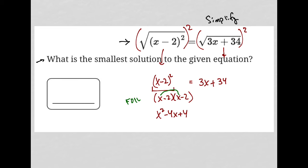F stands for first—I multiply the two first things, which gives x squared. O stands for outer—multiply the two outer things, which is negative 2x. I is for inner—multiply the two inner terms, which is also negative 2x. Negative 2x plus negative 2x gives negative 4x. And L is for last—I multiply the two last terms in parentheses, negative 2 times negative 2, which gives positive 4.